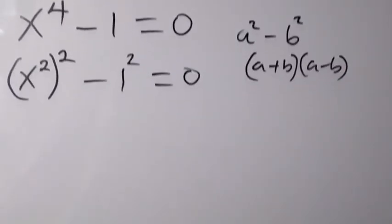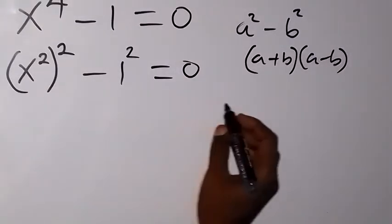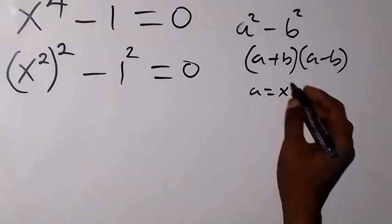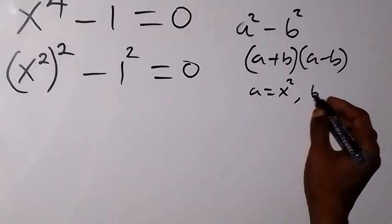And when we apply that here, we can see that a is standing as x square. So a standing as x square, and b here standing as 1.